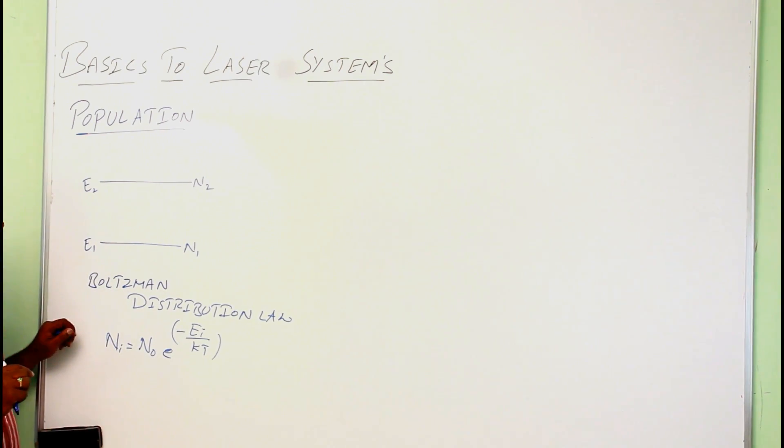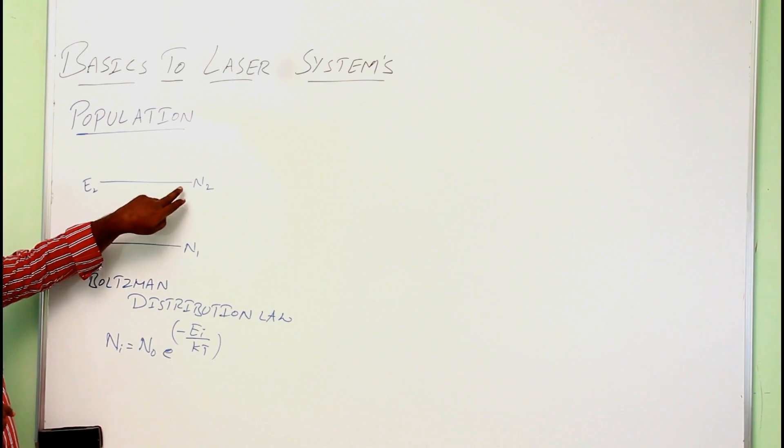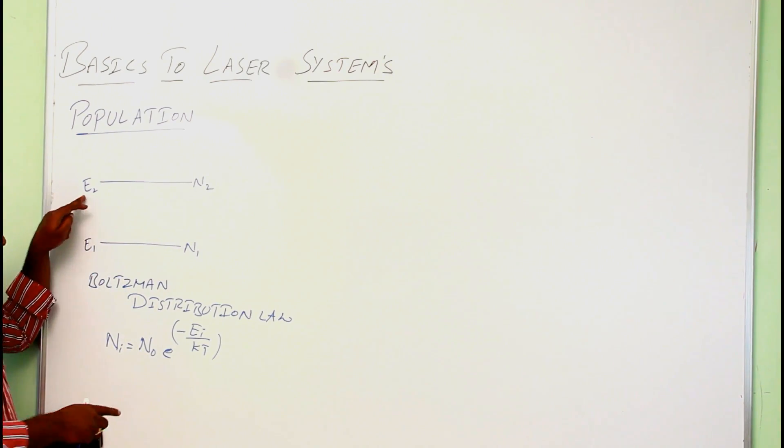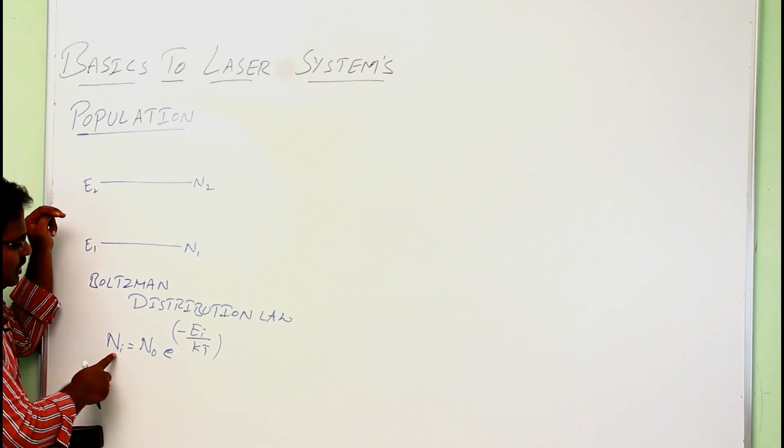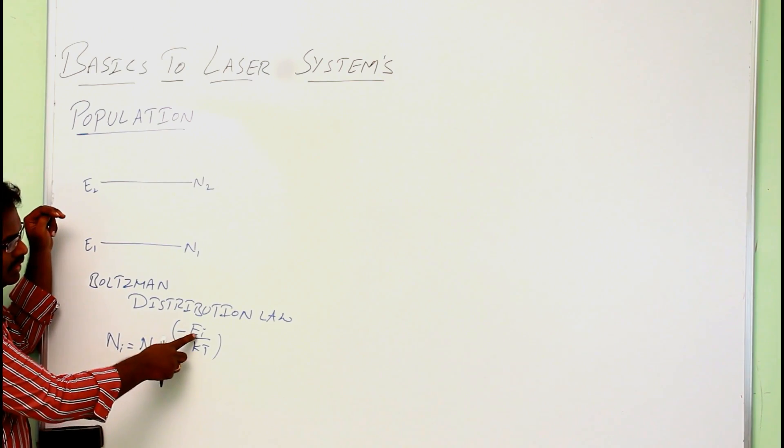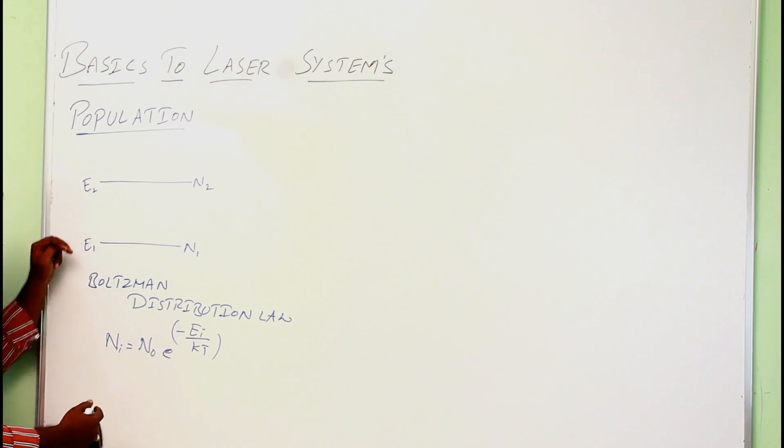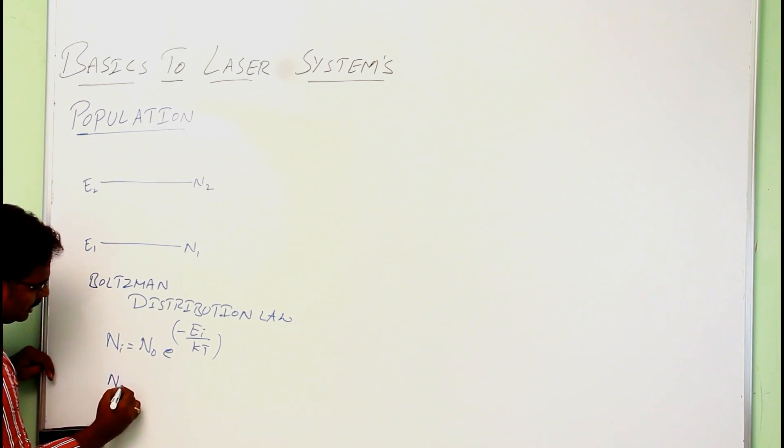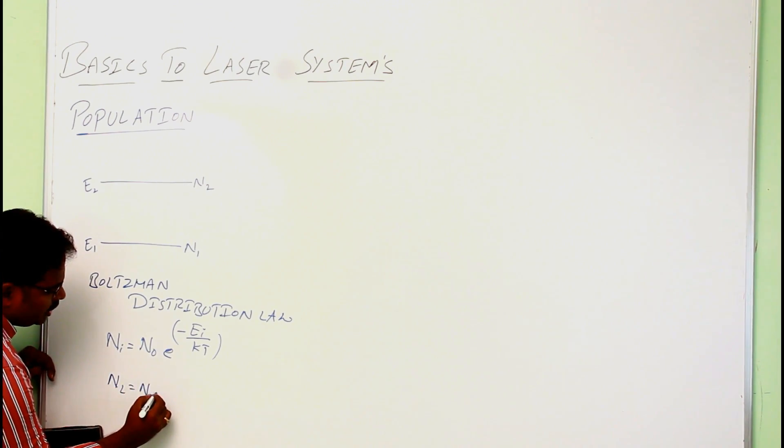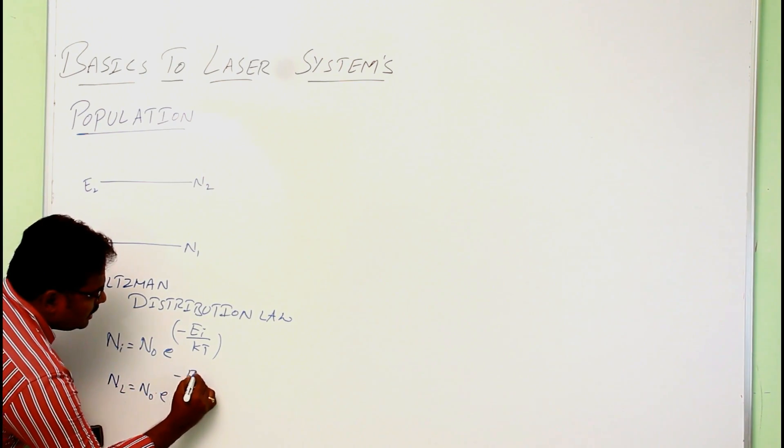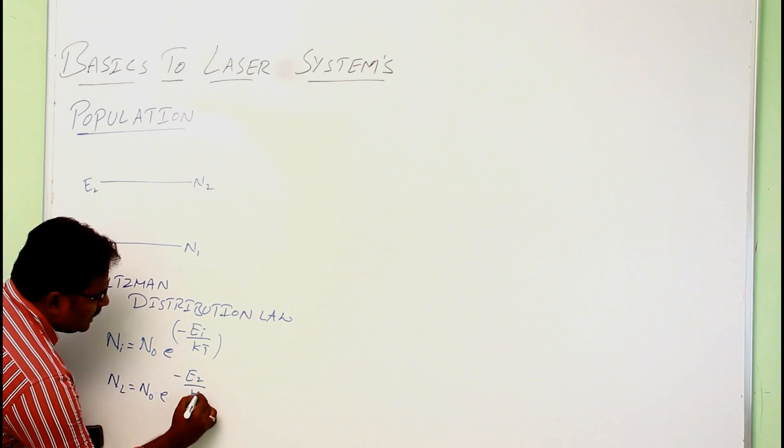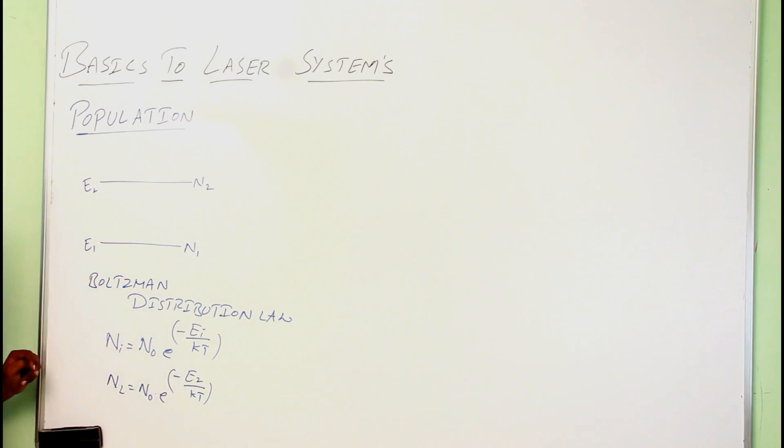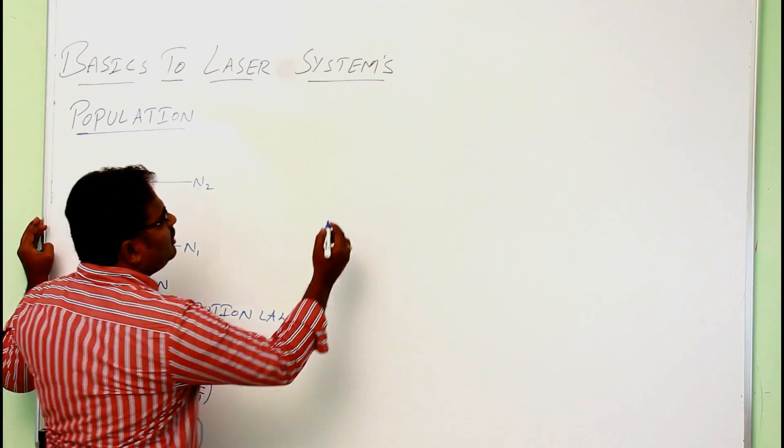So we can calculate N2 and you have to take here as E2 like this: N2 equals N0 into e power minus E2 by KT. So this is the concept of population and the next one is lifetime.